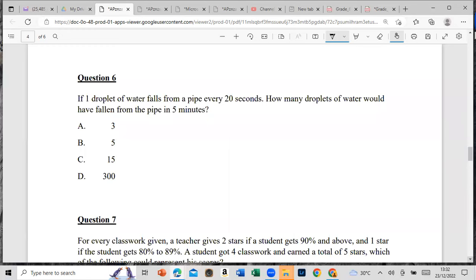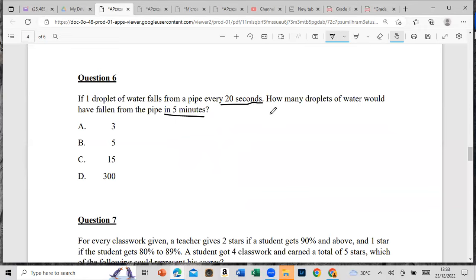Let's move on to question 6. If a droplet of water falls from a pipe every 20 seconds, how many droplets of water would have fallen from the pipe in five minutes? Every 20 seconds. How many seconds make one minute? It is 60. So how many 20 seconds are in a minute? That would be 3. So it's going to drop 3 times per minute, and it's only 5 minutes. So it will be 3 times 5, which will work out to 15.